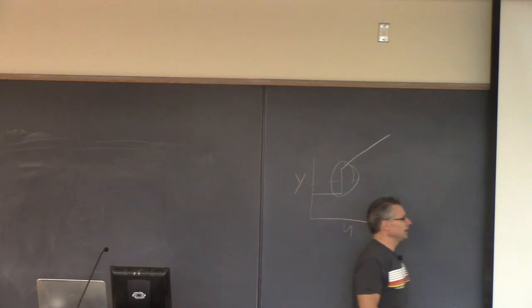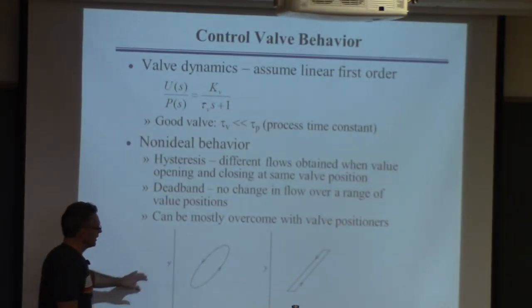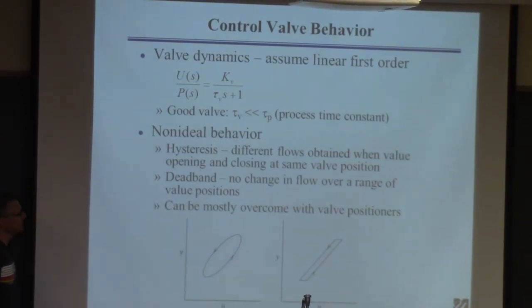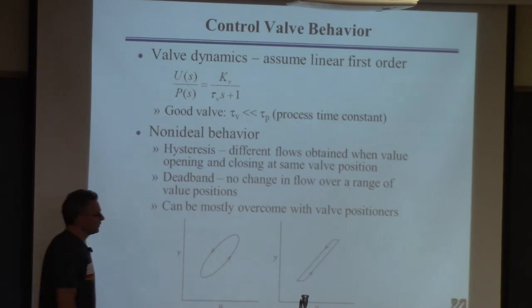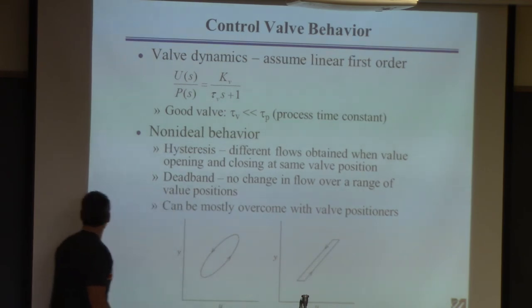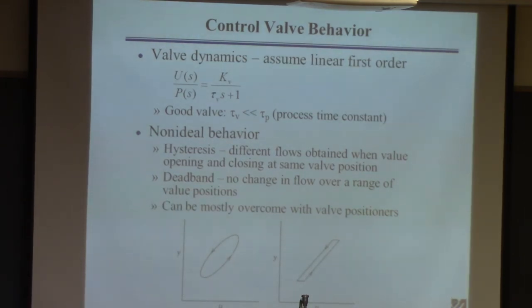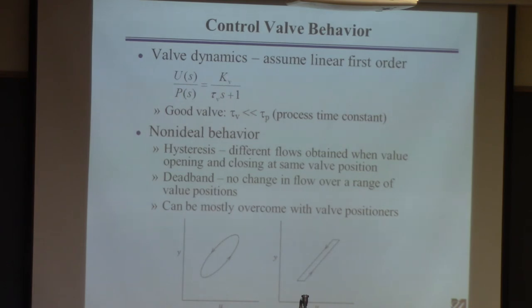There's something called a valve positioner you can put on the valve to try to overcome some of these problems. But if you are a process engineer or a control engineer, you will see all kinds of problems with these valves. Operators are constantly going out and trying to maintain and fix them, because your ability to operate the plant in an automated fashion depends intimately on these valves. Most modern control systems can monitor the position of the valve in addition to the flow coming out. If you start to see your valve exhibit this behavior, someone has to go into the field and fix it. In a typical plant there are hundreds of valves, and at any given time a subset of them aren't working.